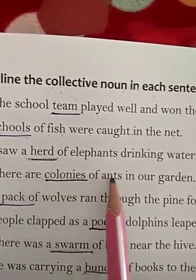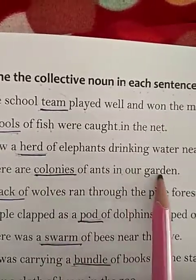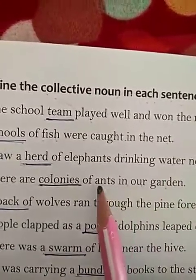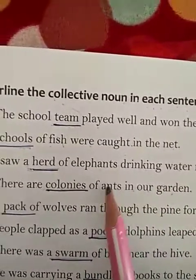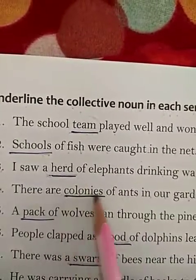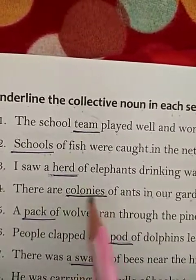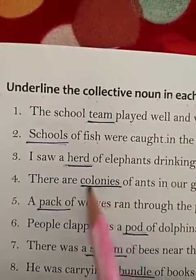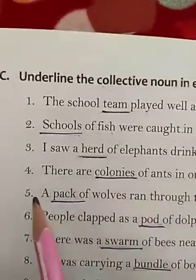Number 4: Colonies of ants in a garden. It means in the garden there is a group of ants, and that group of ants is shown with the word 'colonies'. So, colonies is a collective noun. Underline it.